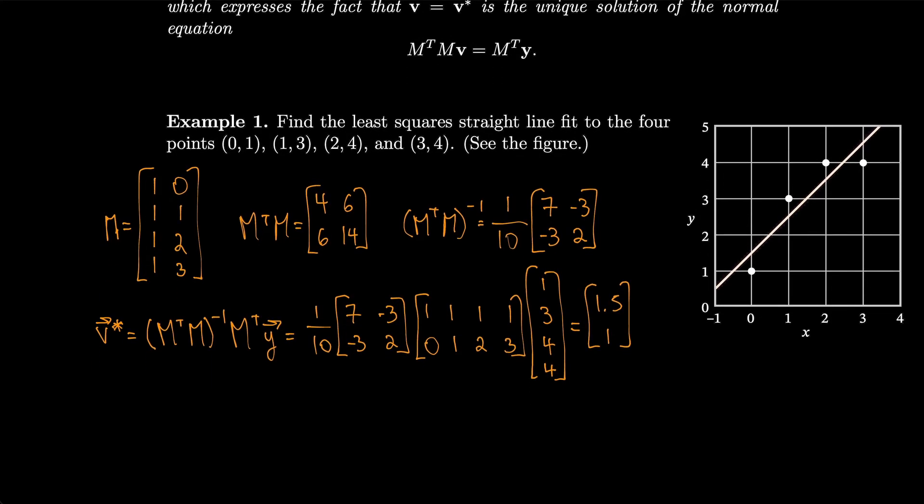So that means that the a value is 1.5. So y = 1.5 + 1 times x, b times x. So that's just x, which kind of makes sense. If you look at this line over here, it looks like it's going up one over one, and it looks like the y intercept right there is at one and a half. So it's cool that we actually found this line of best fit.